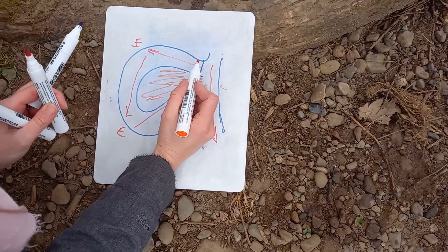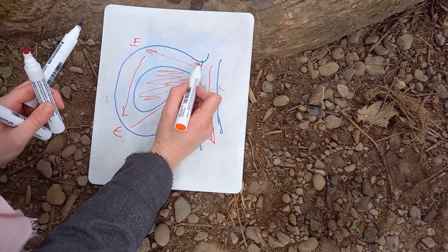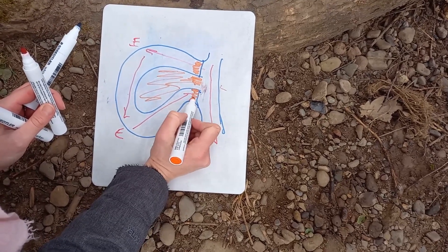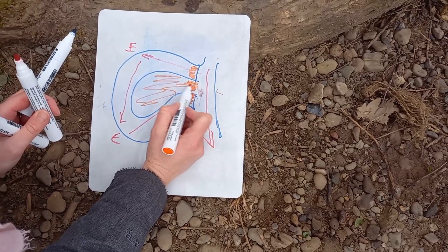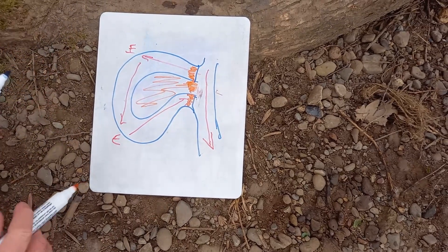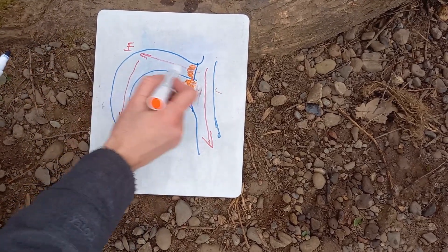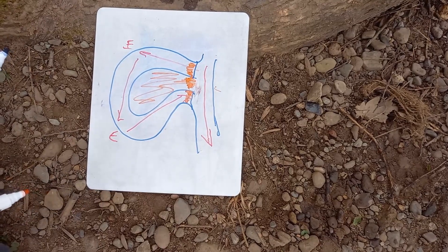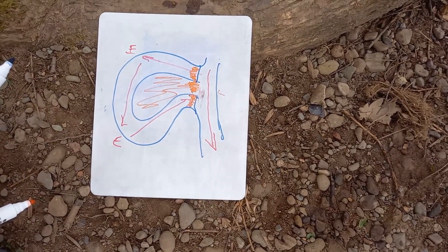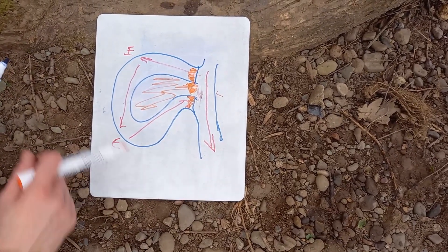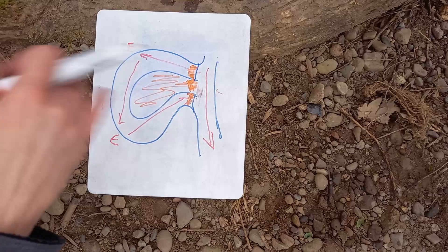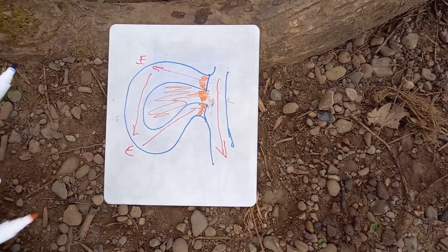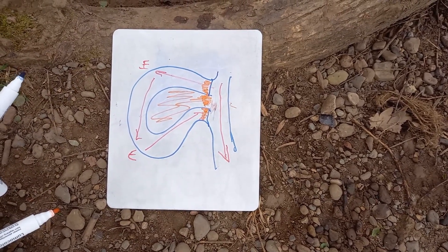And over time, deposition will build up and cut this loop off completely. So what you're left with is a small, semi-circular lake that's cut off from the main river channel — and this is called an oxbow lake. Eventually that might dry up, and you can see the scars of these on satellite photographs or aerial photographs flying over the landscape. I'll see you next time, take care.